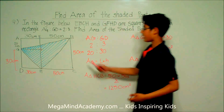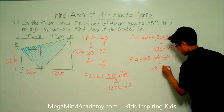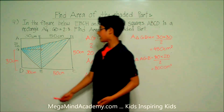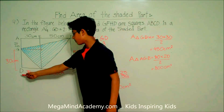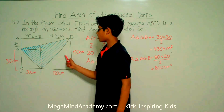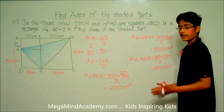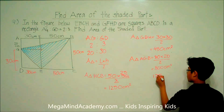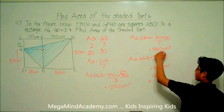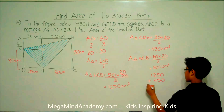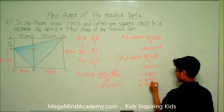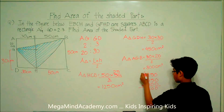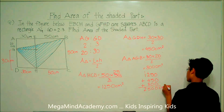Now, to find the area of the shaded portion, we need to first find the area of rectangle ABCD and then subtract the total areas of the unshaded portions. Let's add up the areas of the unshaded portions: 1,250 plus 450 plus 800 centimeters squared is equal to 2,500 centimeters squared.